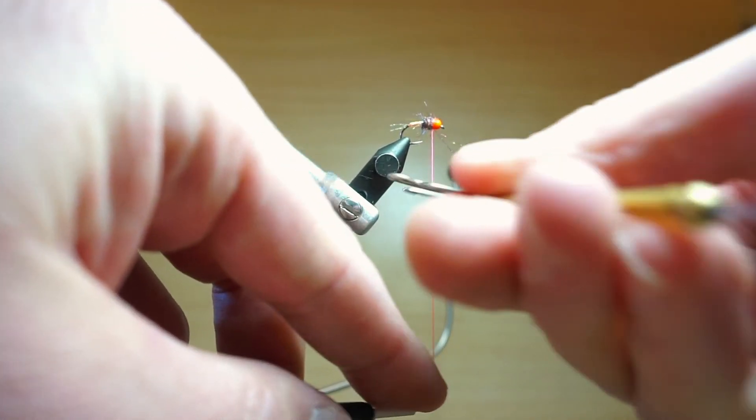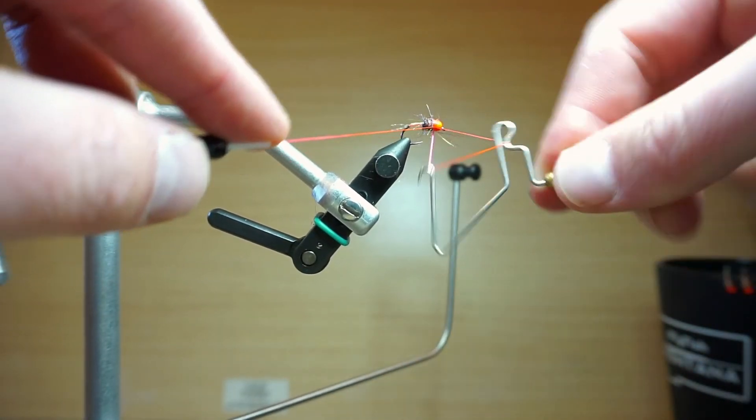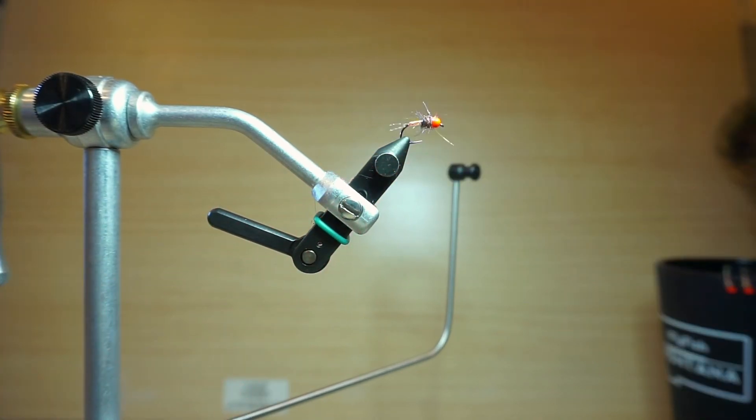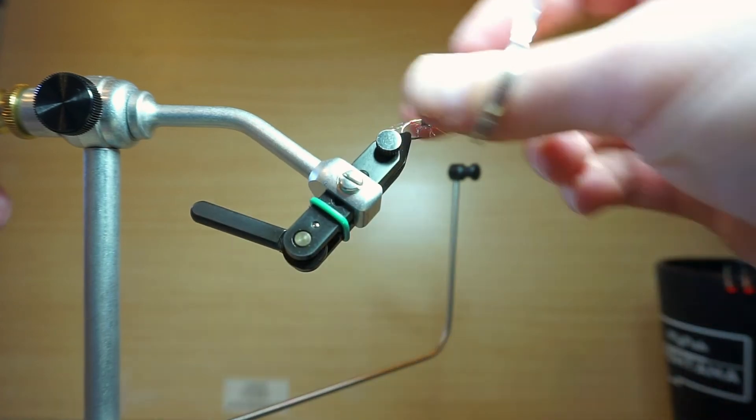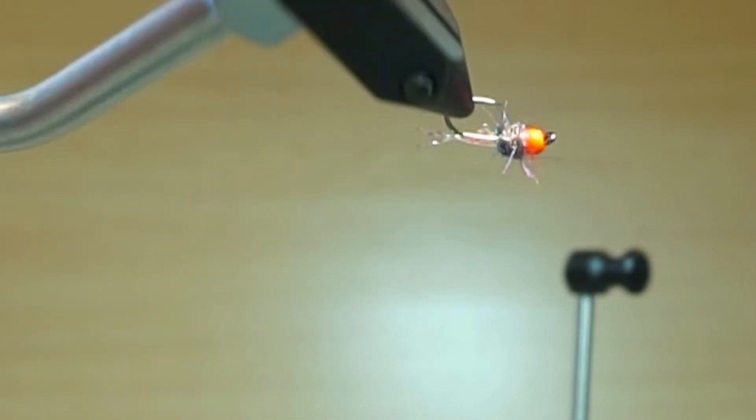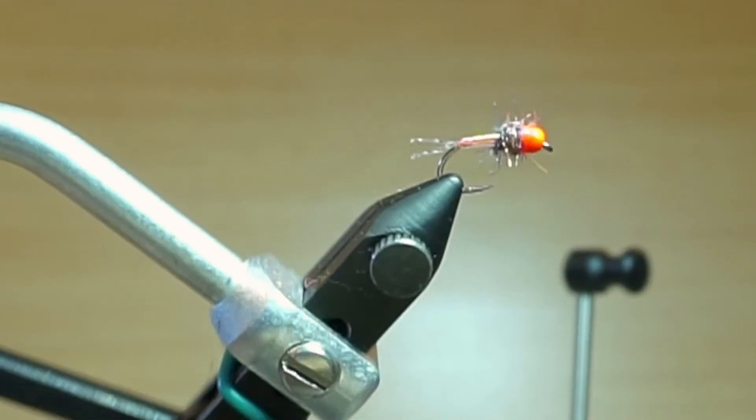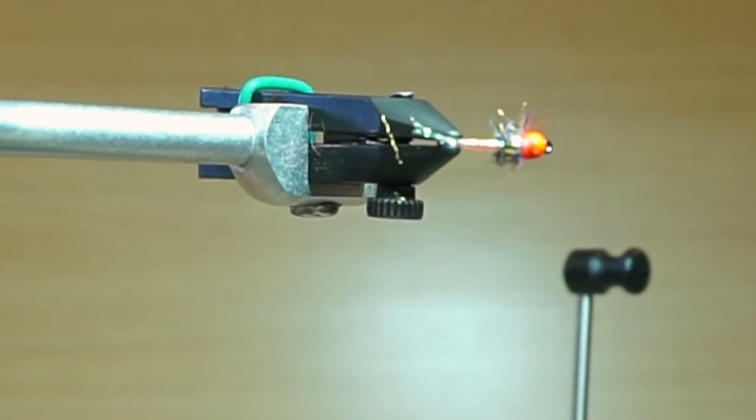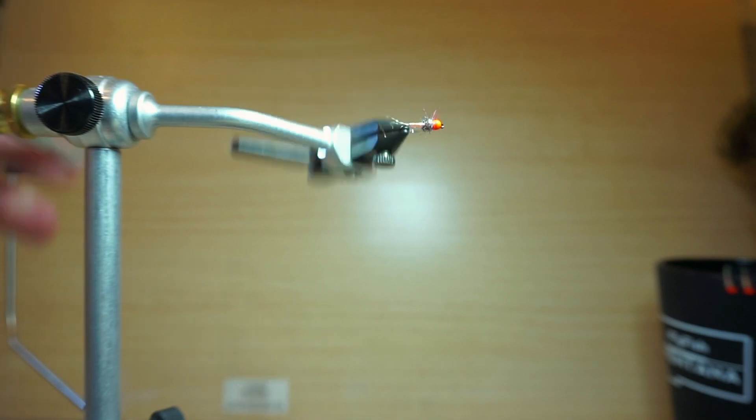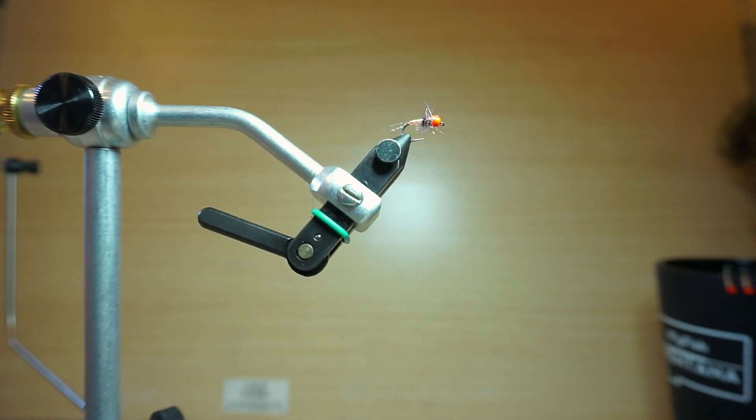I'm going to trim some of these stray dubbing fibers. Again, that's just kind of more for the angler than it is for the fish I feel like. And you'll see my tail isn't perfect there, that's okay. Again, I'd rather tie and experiment and not have perfect flies than to spend so much time trying to perfect the exact way to do it. And there's our completed rainbow warrior.